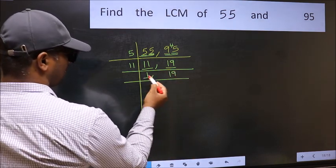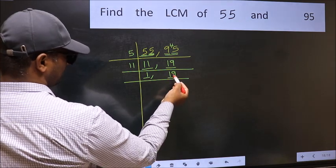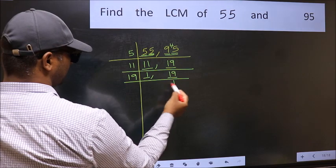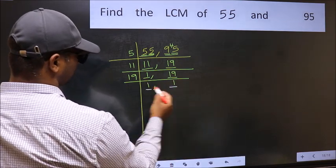Now we got 1 here. So focus on the next number, 19. 19 is a prime number, so 19 ones is 19. So we got 1 in both places.